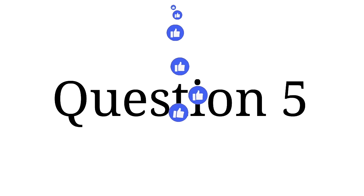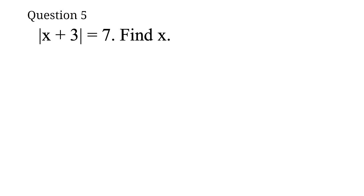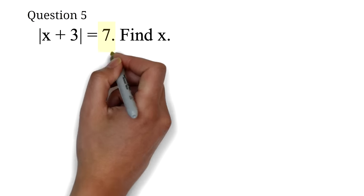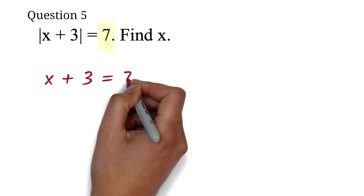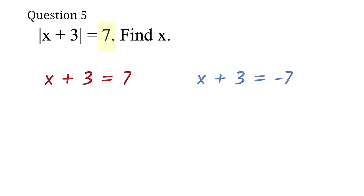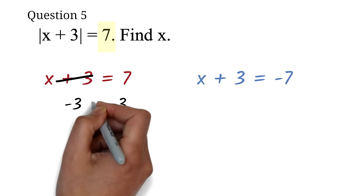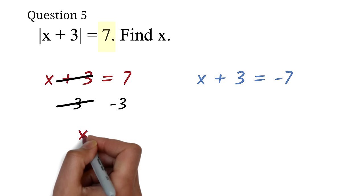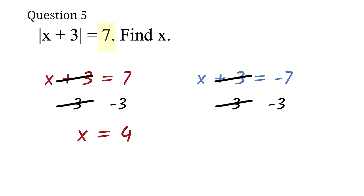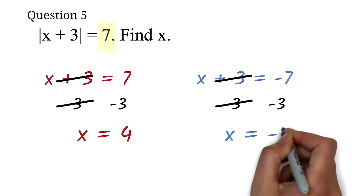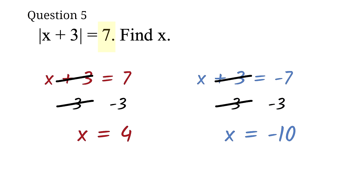Question 5: The absolute value of x plus 3 equals 7. Find x. For absolute value equations, we equate the absolute value to the positive and negative of what is on the other side of the equation. So we have x plus 3 equals 7 and x plus 3 equals negative 7. We solve both equations. For the first one, we subtract 3 from both sides — the 3 cancels out, and 7 minus 3 is 4. For the second one, we subtract 3 from both sides — negative 7 minus 3 is negative 10. So our answer is x equals 4 and x equals negative 10.